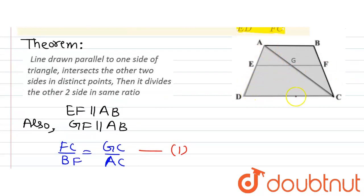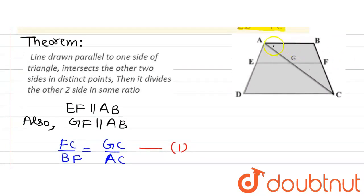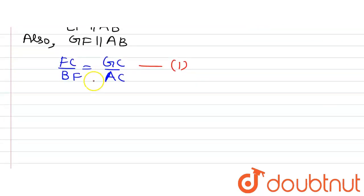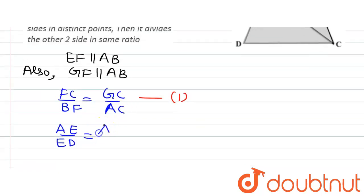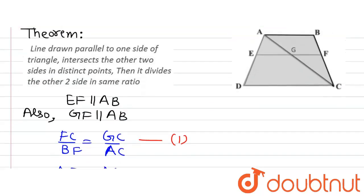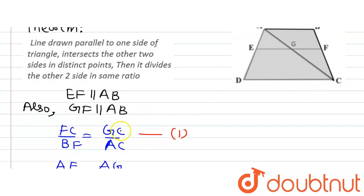Now in triangle ADC, we have EG parallel to AB, and we know that AB is parallel to DC. That means EG is also parallel to DC. Applying the same theorem, we get AE divided by ED is equal to AG divided by GC. Also, the correction for equation 1 is that FC divided by BF is equal to GC divided by AG.